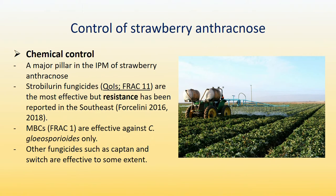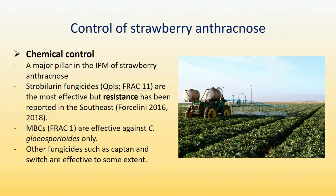TOPSIN-M, a FRAC 1 fungicide, is effective only against Colletotrichum gloeosporioides. Based on the isolates we collected, most of them are Colletotrichum acutatum, not gloeosporioides. And even for isolates within gloeosporioides, some have developed resistance to TOPSIN-M. So TOPSIN-M probably is not going to do much for anthracnose control at this point.